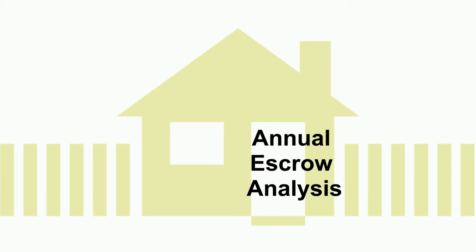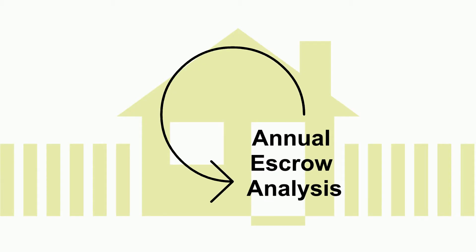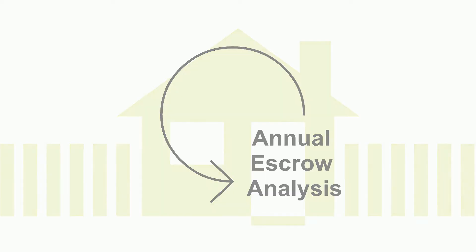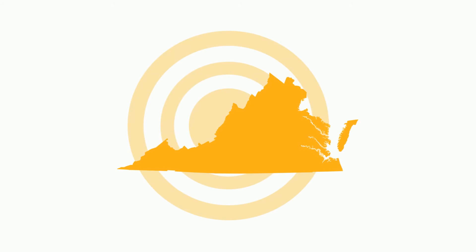Every year Virginia Housing conducts an analysis of your escrow account. We do this to ensure the account has the required amount of funds in it so we can disburse anticipated payments on your behalf for the upcoming year. The locality where your home resides will determine when Virginia Housing analyzes your escrow account.